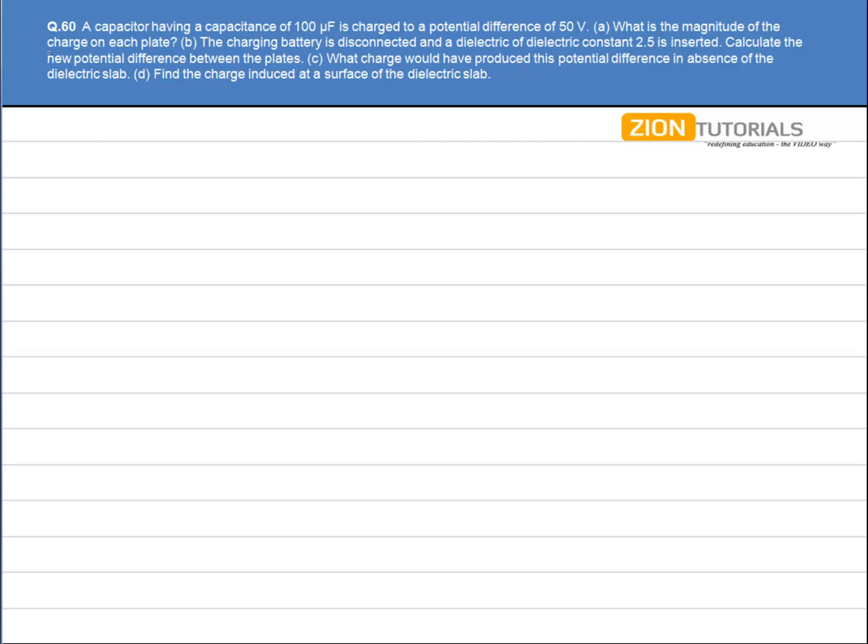A capacitor having a capacitance of 100μF is charged to a potential difference of 50V.